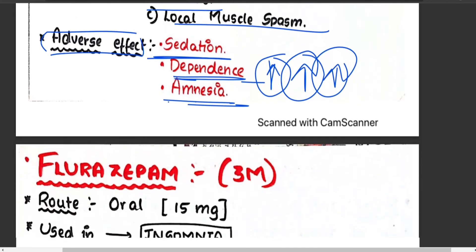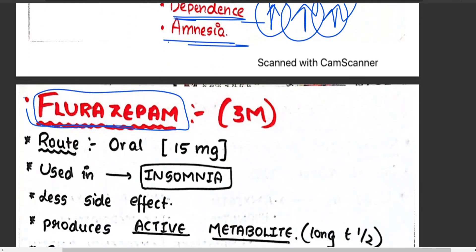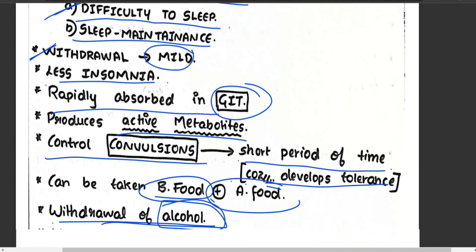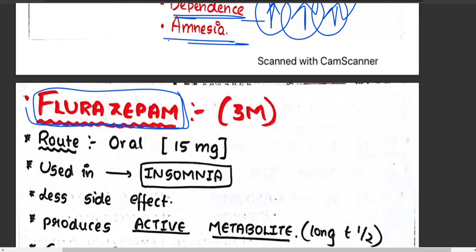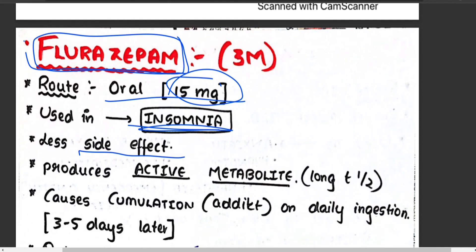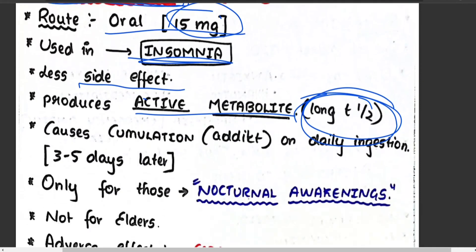The second important drug is flurazepam. Route: oral, typically 15 mg; rectal for children is possible; IV is also possible but IM is not, due to poor absorption. It is mainly used for insomnia and has fewer side effects than diazepam. It produces active metabolites and has a longer half-life, leading to accumulation — meaning it causes dependence faster than diazepam with daily use.